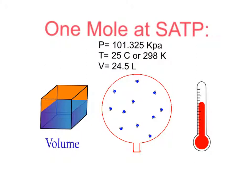At SATP, the pressure stays the same, but the temperature and volume change. The temperature changes from 0 degrees Celsius to 25 degrees Celsius, or from 273 kelvin to 298 kelvin, and the volume changes from 22.4 liters to 24.5 liters.